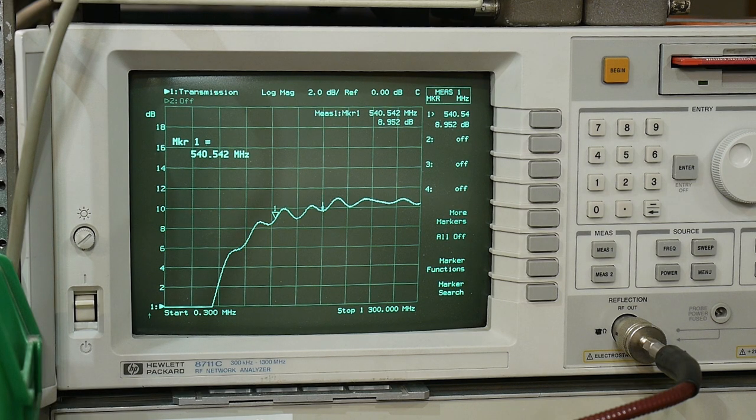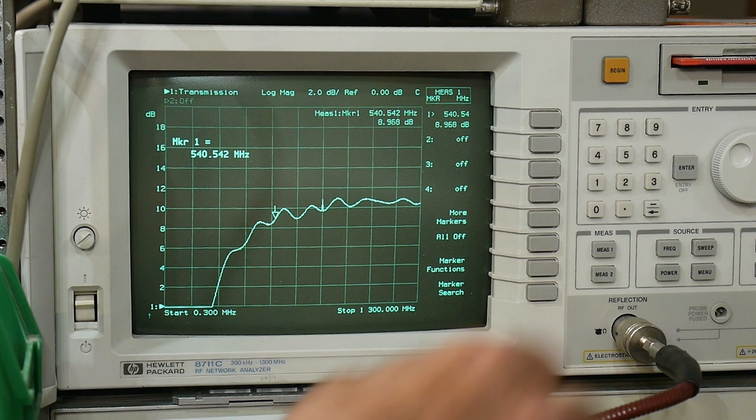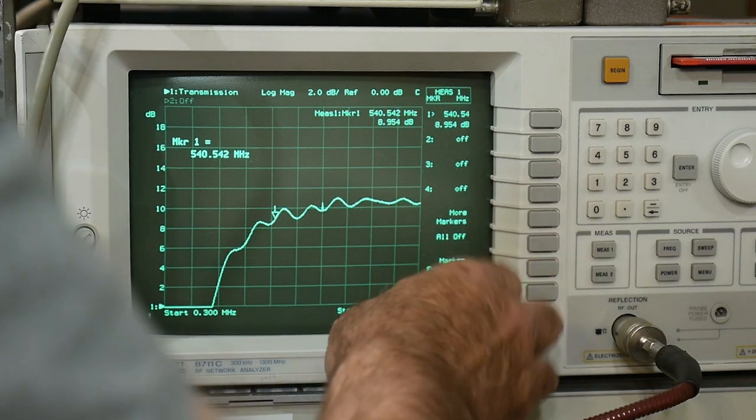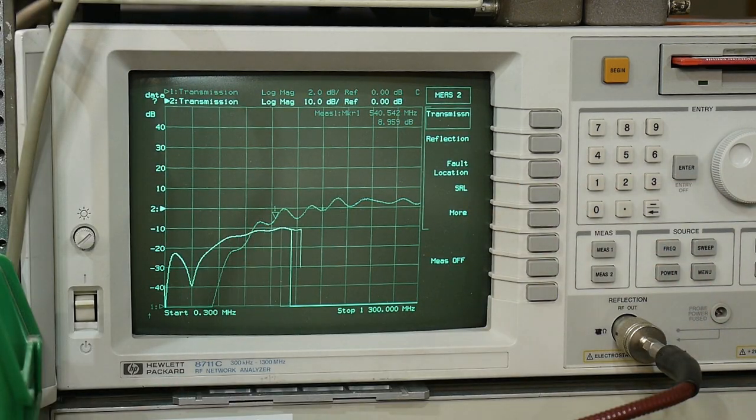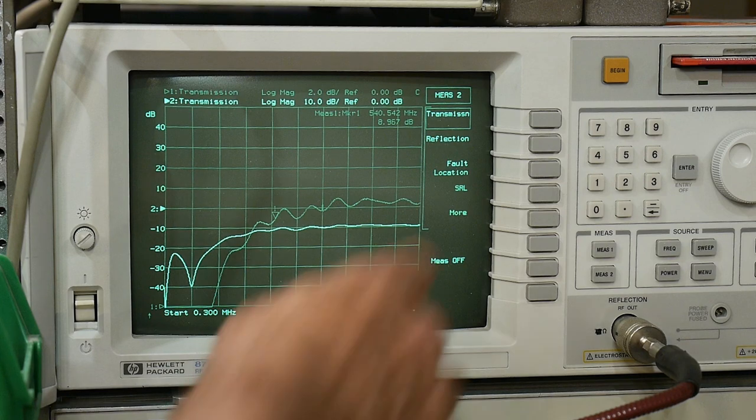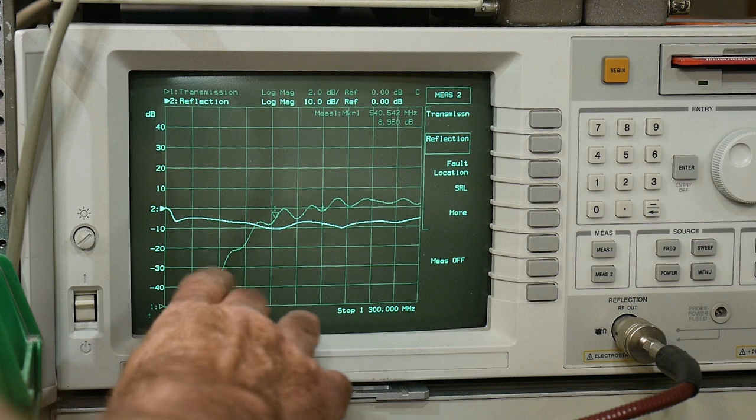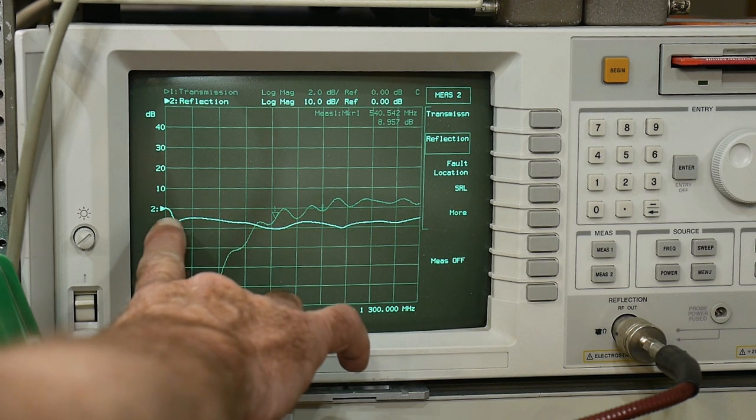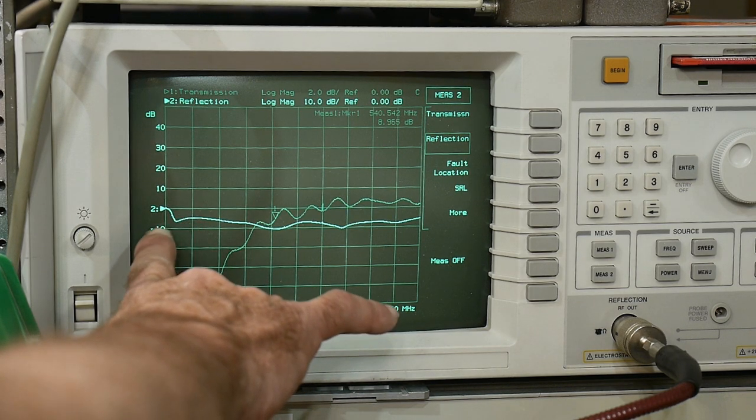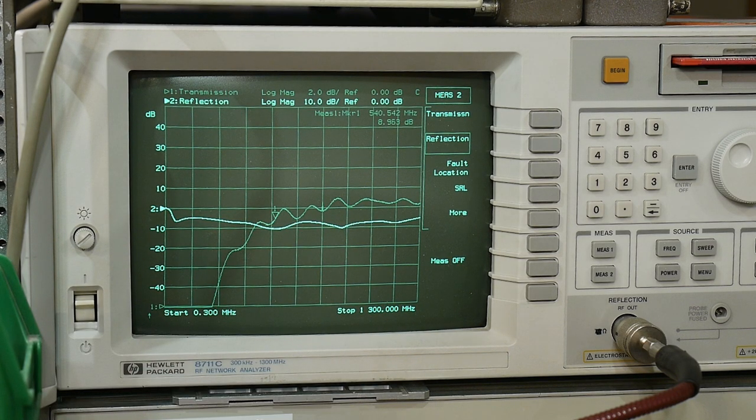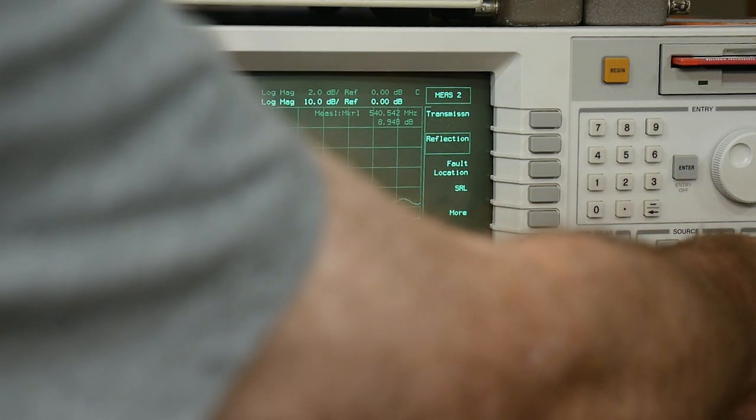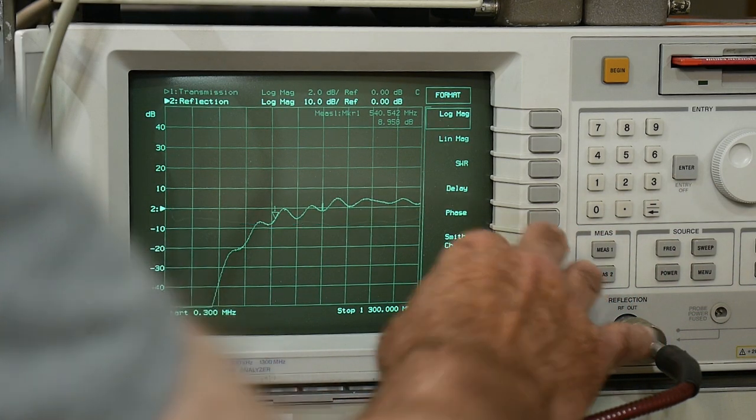All right, we can also take a look at the S21 or the S11 parameter. Might as well. Are we okay to do that in this situation? I'm pretty sure we are. So let's go here to measurement 2, and we will hit reflection. And this is the S11, and we're getting about not a very good match, not a very good match at all. Let's do a Smith chart.